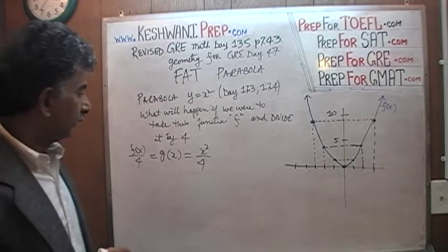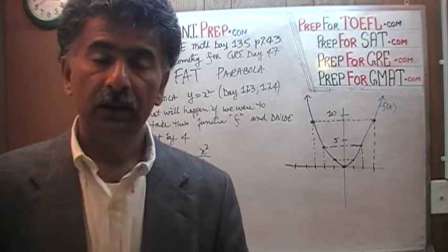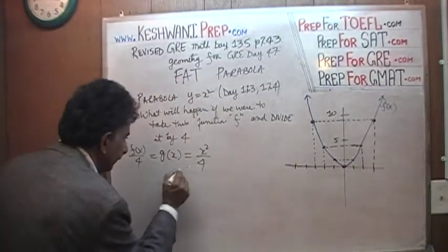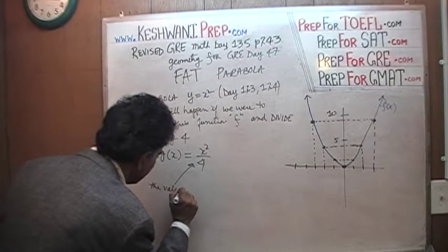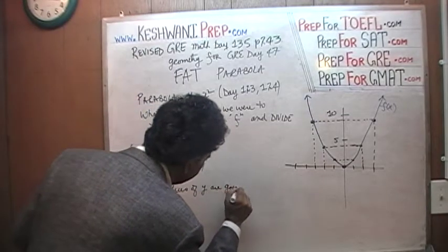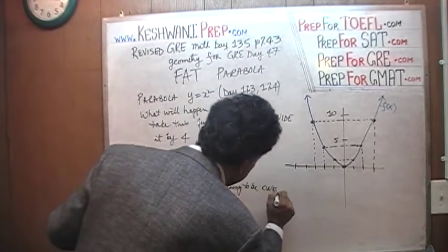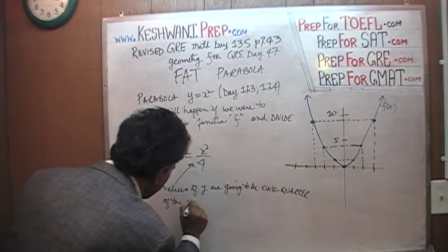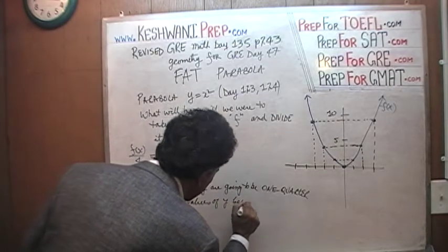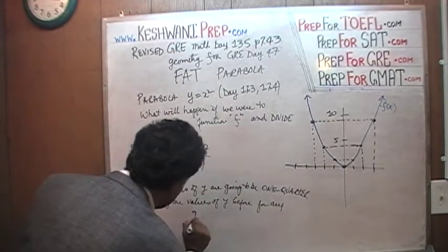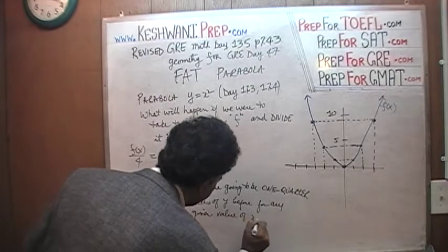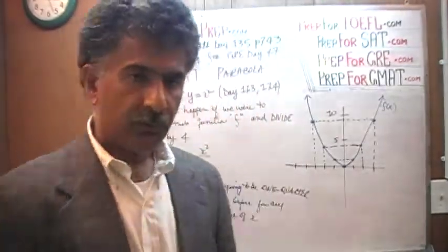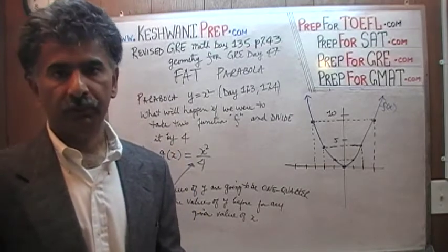We're taking the old function and dividing it by 4, which simply means the value of y now is going to be one quarter of the values before for each given value of x. The values of y are going to be one quarter of what they were before. So when x was 0, y was 0 — and now when x is 0, y is one quarter of 0, which is still 0. So it starts at the origin.